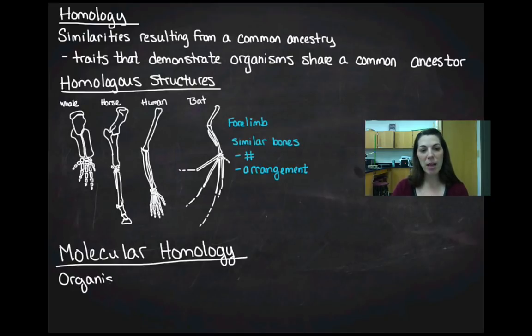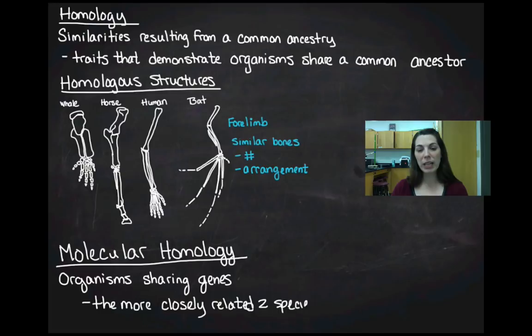In molecular homology, what you're seeing is that organisms are sharing genes. If you actually sequence the DNA of these organisms, you'll see that there are a lot of genes that are basically the same. The more closely related the two species are, the more the DNA sequences are identical. So the closer the DNA sequences are to one another, the more molecular homology there is, and the closer related those organisms are.